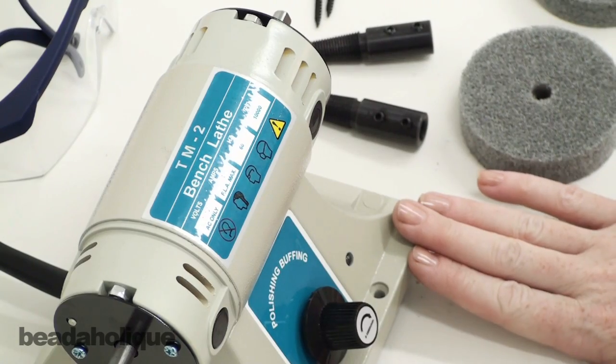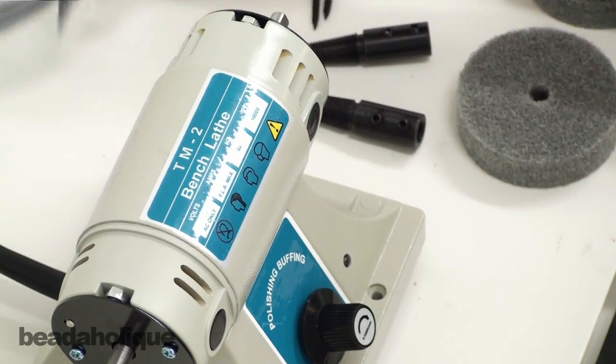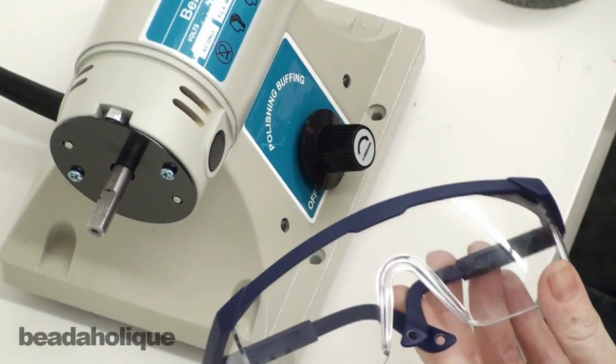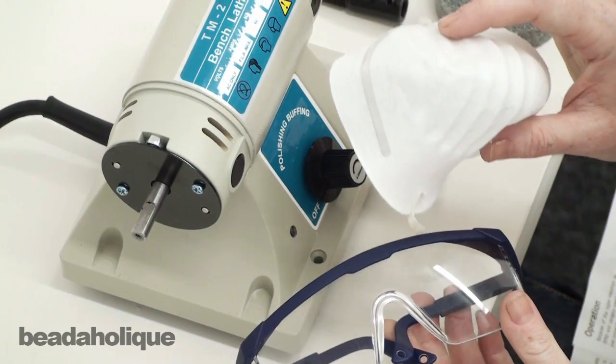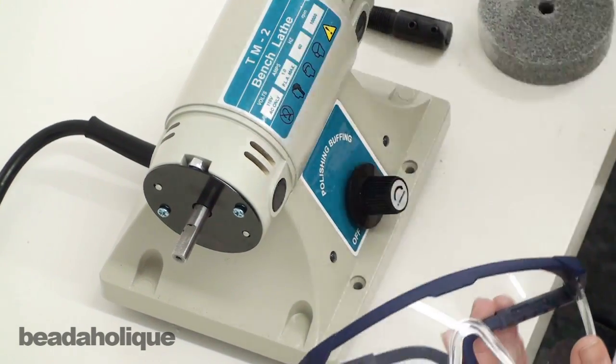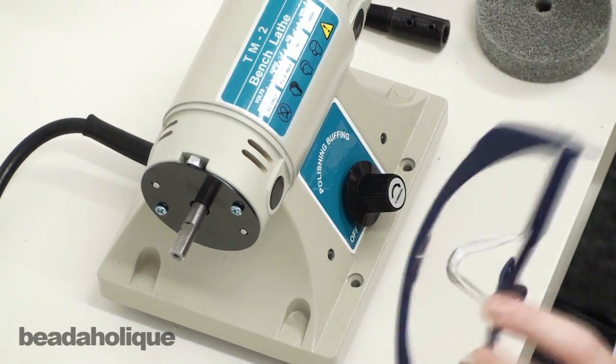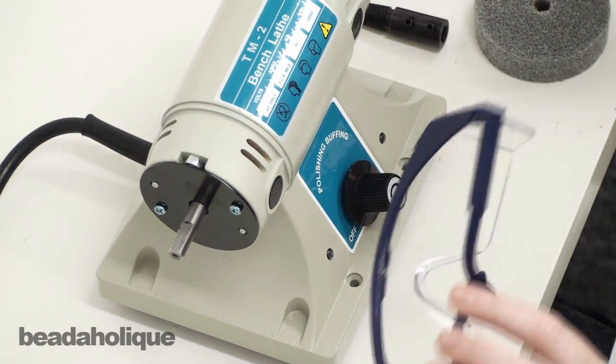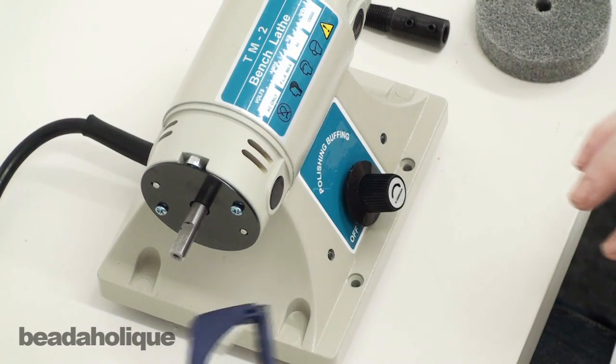Before you get started, you want to work in a well-ventilated area. You are going to absolutely need some safety goggles and a mask as well, so you don't breathe in any of the dust. Definitely cover your mouth, keep your mouth shut, and use safety goggles. Always take precautions.